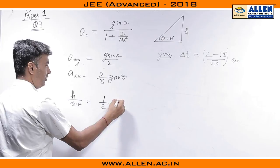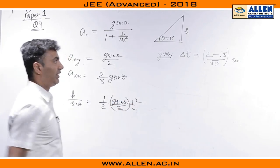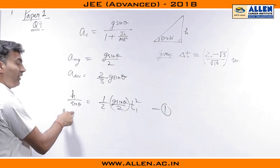So, half g sin theta by 2 t1 square gave you the expression of t1 in terms of h.